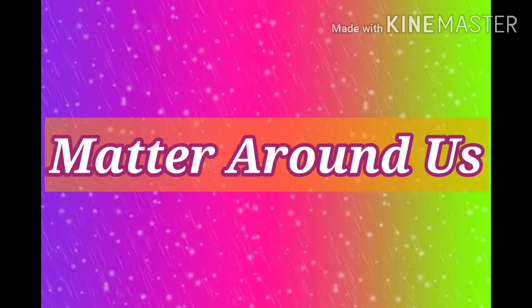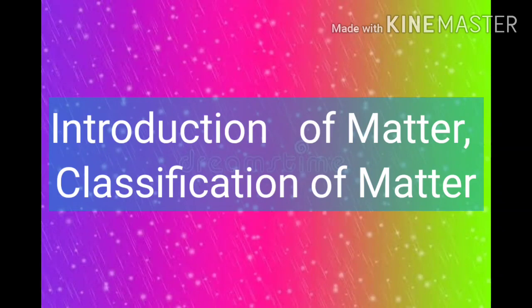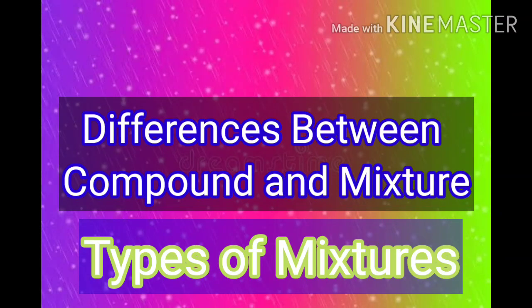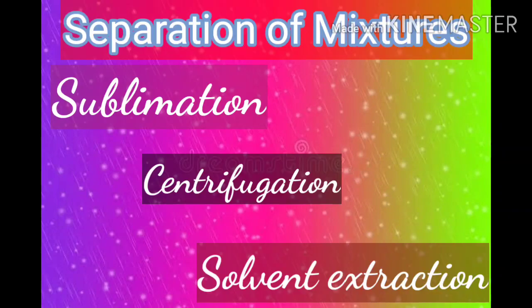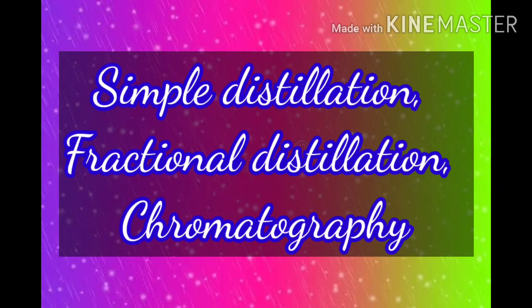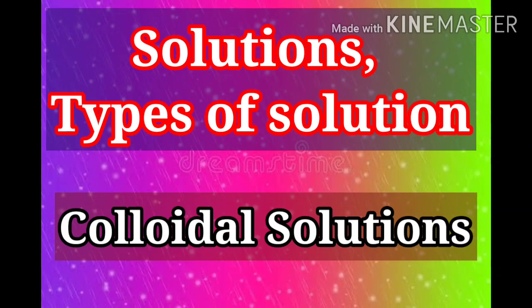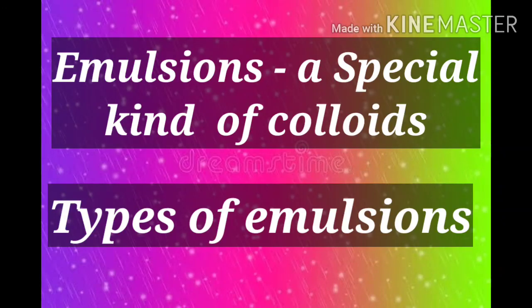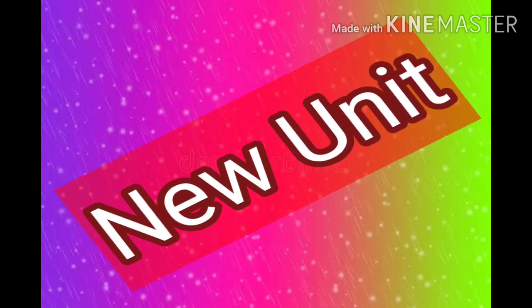OK, my dear students, the matter around us lesson is over. So far we learnt about the introduction of matter, classification of matter, elements, compounds, mixtures, differences between compound and mixture, types of mixtures, and separation of mixtures — where we saw six methods: sublimation, centrifugation, solvent extraction, simple distillation, fractional distillation, and chromatography. In this video we learnt solutions, types of solution, colloidal solutions, emulsions, special kinds of colloids, and types of emulsions. I hope you understood this lesson. Next video we will see a new unit. Thank you.